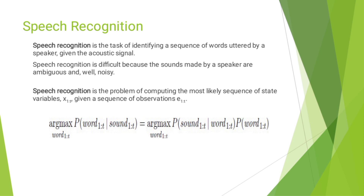Speech Recognition is the problem of computing the most likely sequence of state variables x1 to t, given a sequence of observations e1 to t. The formula is: argument max over word 1 to t of p(word 1 to t | sound 1 to t), which equals argument max over word 1 to t of p(sound 1 to t | word 1 to t) times p(word 1 to t). Here p(word 1 to t) is known as the language model.